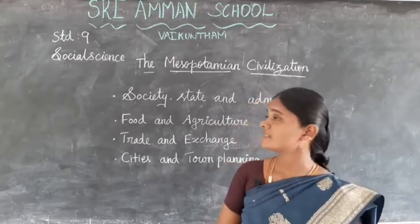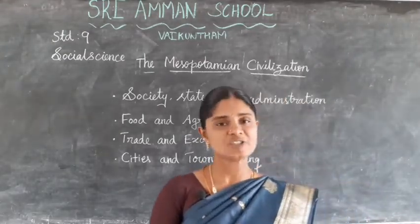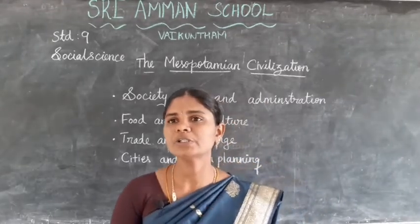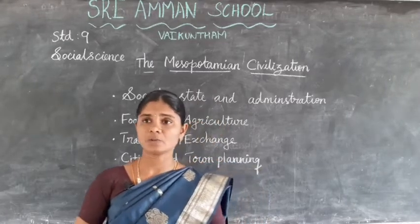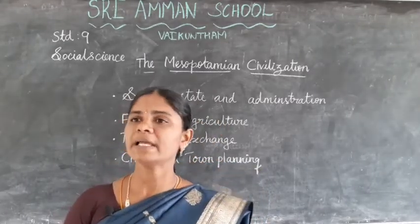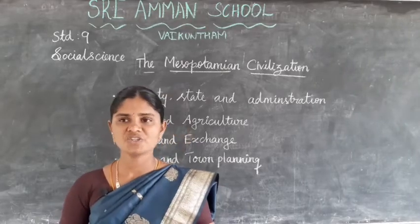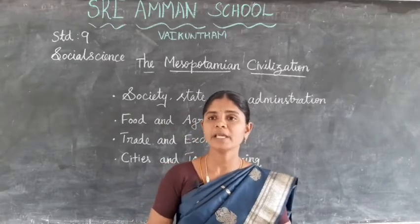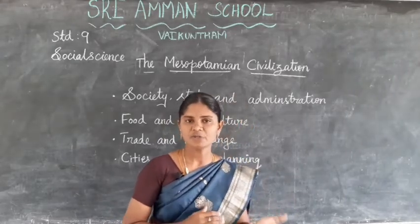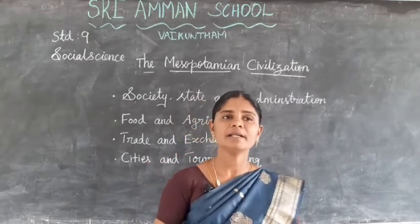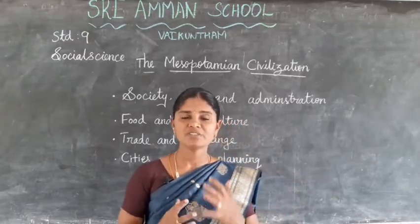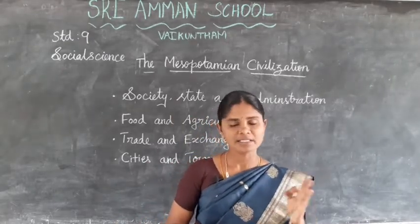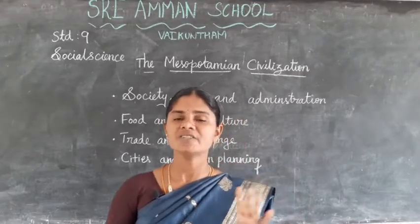Hello students, greetings of the day. This is 9th standard social science history unit 2, ancient civilizations. Simply in this lesson we are going to learn about the 4 ancient civilizations. First we must know the meaning of civilization — it means advanced organized life. Ancient means very old. The four important civilizations are Egyptian civilization, Mesopotamian civilization, Indus civilization, and Chinese civilization.